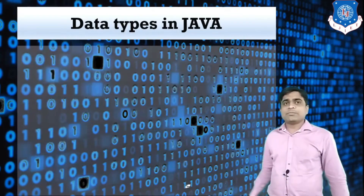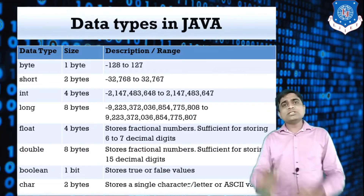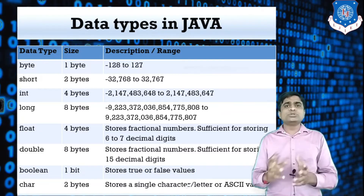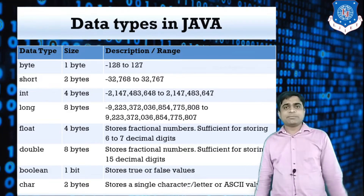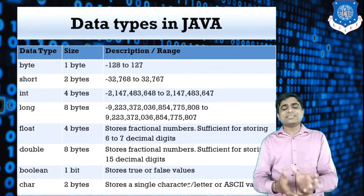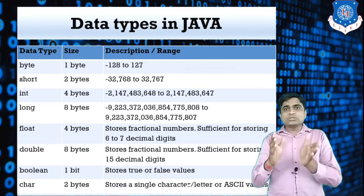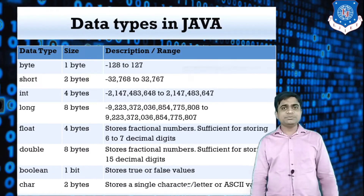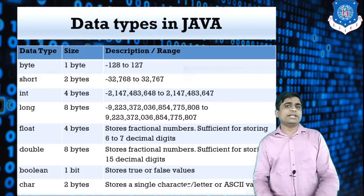The next topic is data types in Java. Whenever you want to use different values in a program, you use different data types. For example, if you want to use an integer value, use the integer data type. If you want to use a character, use the character data type. For a floating-point value, use the float data type.